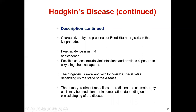Hodgkin disease is characterized by the presence of Reed-Sternberg cells in the lymph node. Peak incidence is in mid-life or adolescence. Possible causes include viral infection or previous exposure to alkaline chemical agents. Prognosis is excellent with long-term survival depending on stage. Primary treatment modalities are radiation and chemotherapy, each used alone or in combination depending on clinical stage.